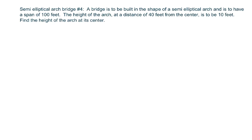What you're going to do is write out the given values: 100 feet span, 40 feet distance, and 10 feet height. The bridge has a span of 100 feet, so 2a = 100, therefore a = 50.